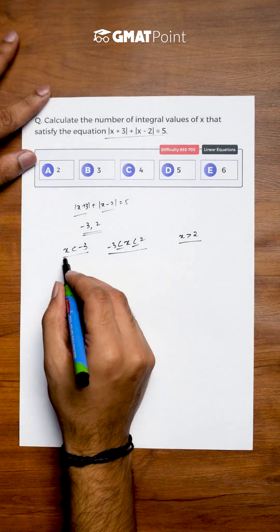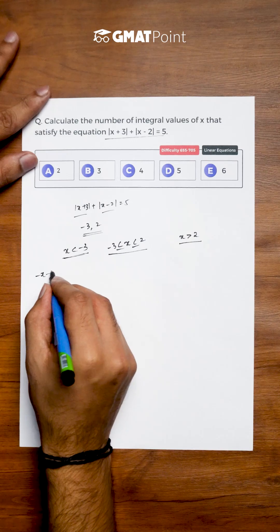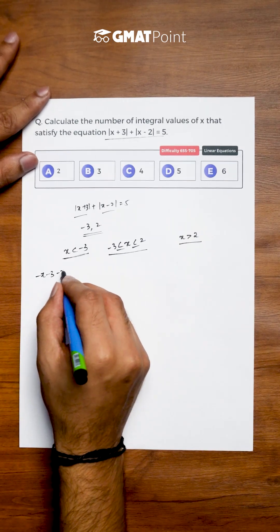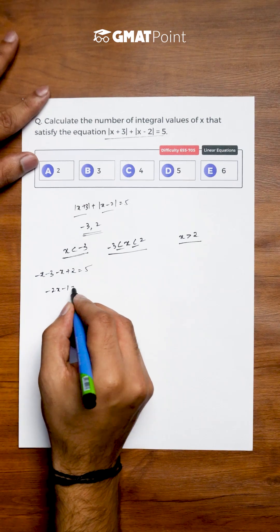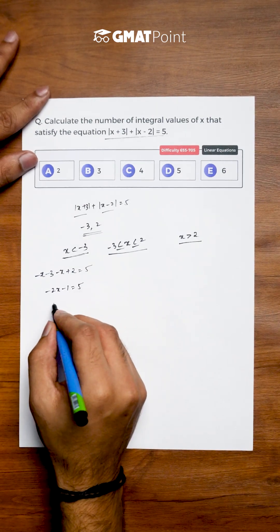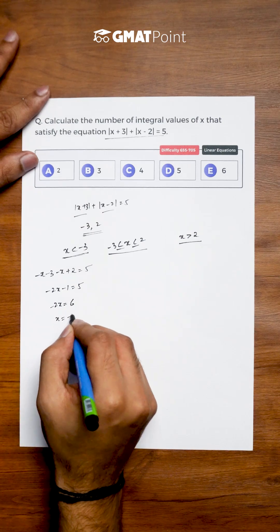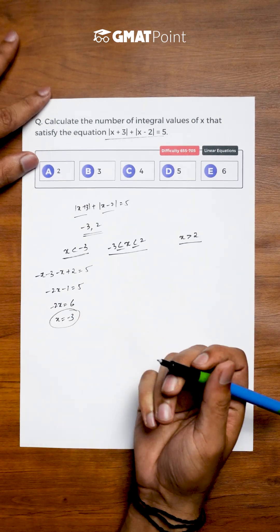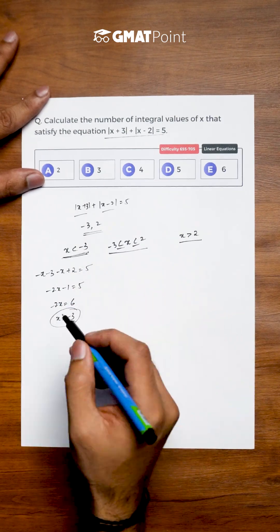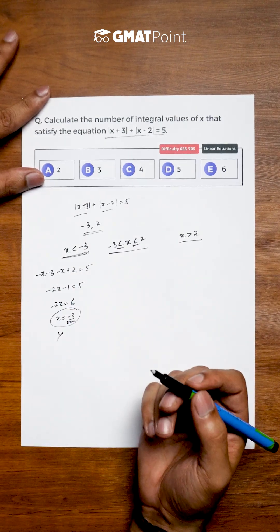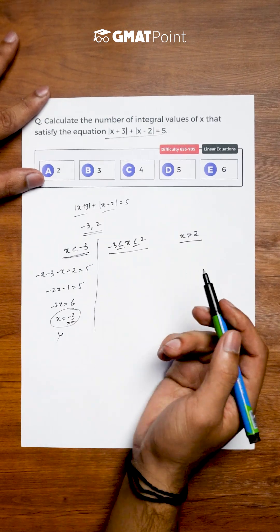For values of x less than -3, the equation becomes (-x-3) + (-x+2) = 5, giving -2x - 1 = 5. This yields -2x = 6, so x = -3. Since -3 is not included in the range x < -3, there is no value of x that satisfies the equation in this range.